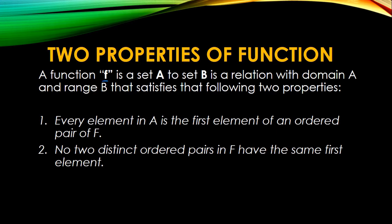So there are two properties. A function F from set A to set B is a relation with domain A and range B that satisfies the following properties. First, every element in A is the first element of an ordered pair of F. And second, no two distinct ordered pairs in F have the same first element. So meaning, in an ordered pair, the first element, which are your X values or your domain, cannot repeat.